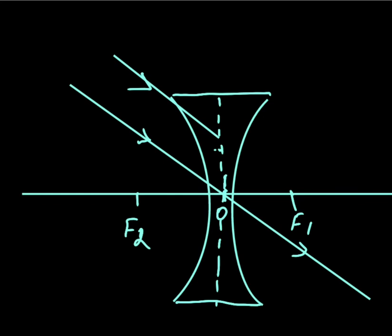For image formation, the object is at infinity, so we do not show the object. We consider two parallel rays coming from the infinite object. The first ray passes through the optic center, so it goes undeviated. That is the first ray.